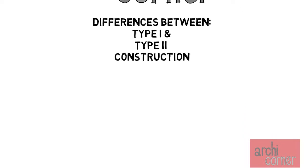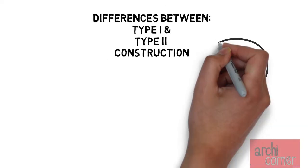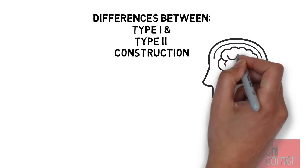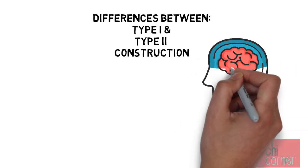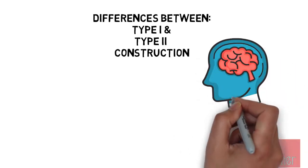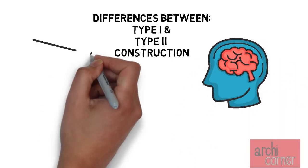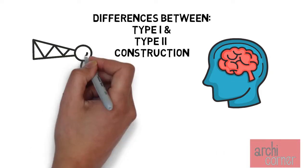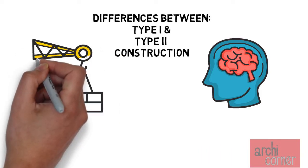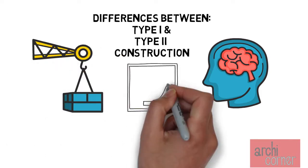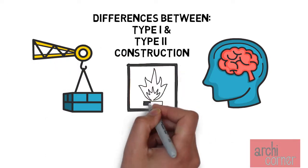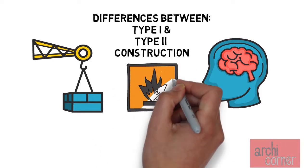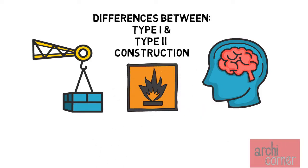This is not as hard as it sounds. There are only two things that you need to have in mind regardless of the building type you are designing. One is the materials you are going to use for specific building elements, and two, if any of those building elements need to be provided with a certain fire resistive rating.